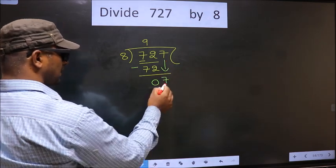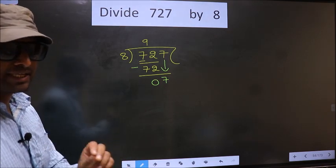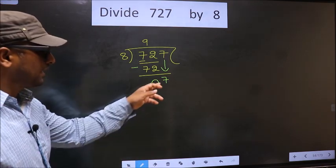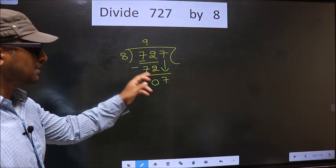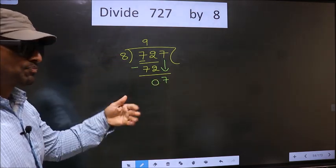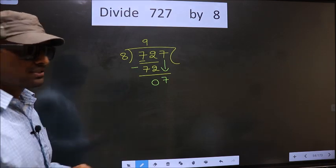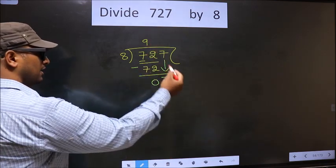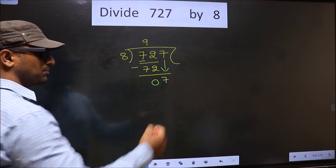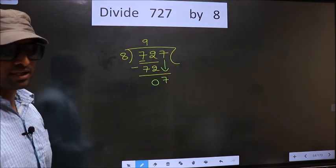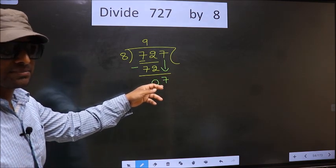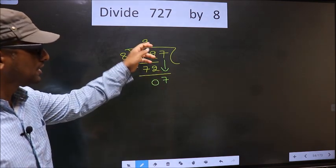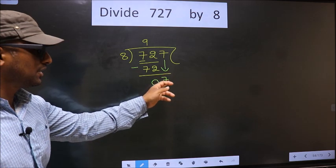This is where the mistake happens. And the mistake is this. Here we have 7. Here 8. 7 smaller than 8, so what many do is they put a dot and take 0 here. Which is wrong. Just now you brought the number down, and in the same step you want to put a dot and take 0 here.